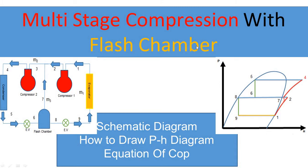The flash chamber is also known as the flash gas removal device. I will explain in detail what its function is and why this component is used. In this system there are two compressors, one condenser, one flash chamber, and one evaporator.